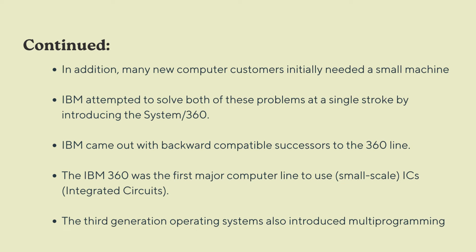IBM — International Business Machines Corporation — attempted to solve both these problems in a single stroke by introducing the System 360. IBM later came out with the backward-compatible successor to the 360 line. The IBM System 360 was a major computer line that introduced small ICs, and the third generation was characterized by multiprogramming capabilities.